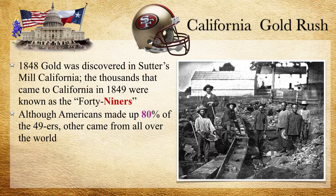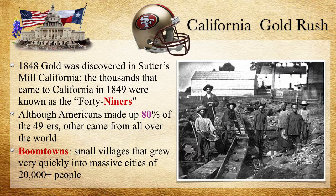Most of these people were Americans, but about 20% came from as far away as Australia, Europe, Britain, Canada, and Mexico — people were coming from all over the world to try to get rich and find gold. You even saw some from China and Japan coming over. This created what's called a boom town: a small village that almost overnight grows into a massive city with over 20,000 people — towns of maybe 100 people exploding to over 20,000, popping up everywhere to support the growing population brought in by the gold rush.